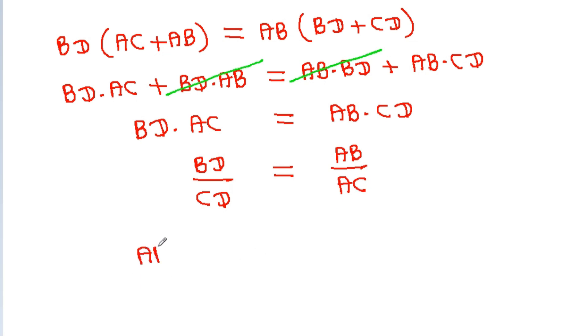So we get AB by AC is equal to BD by CD, hence proved.